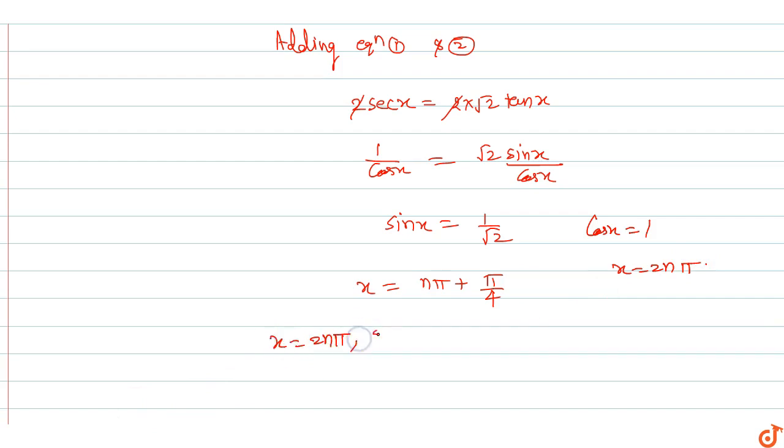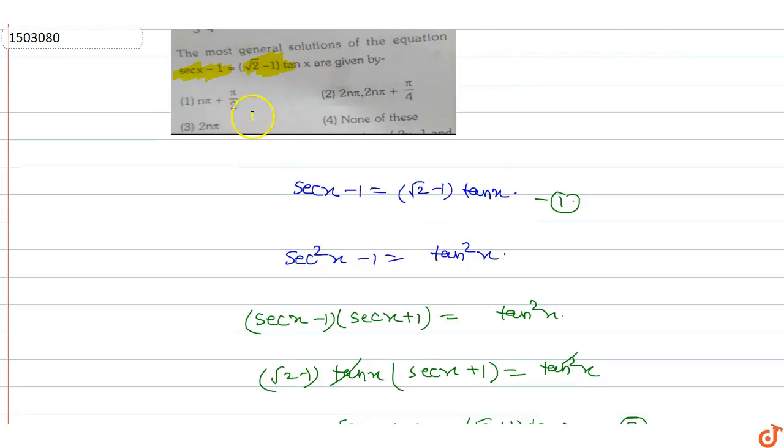So the most general solution is two n pi and two n pi plus pi by four. The most general solution is two n pi and two n pi plus pi by four.